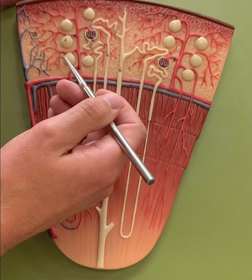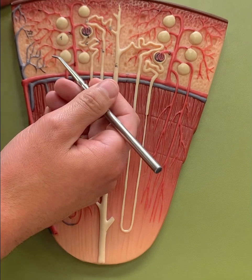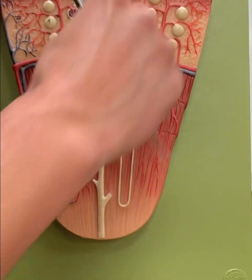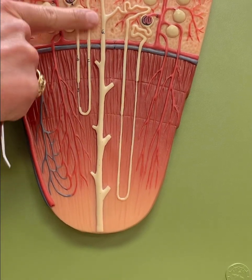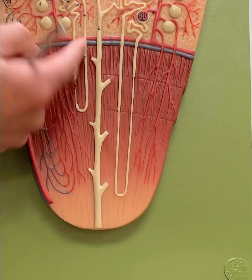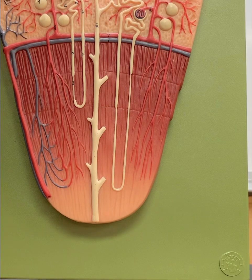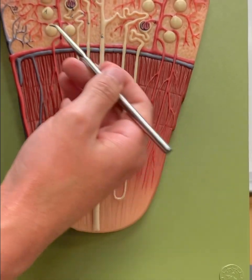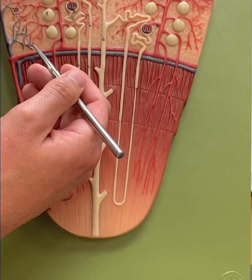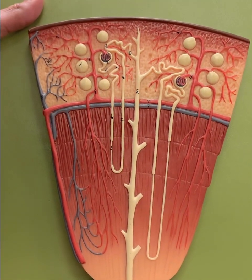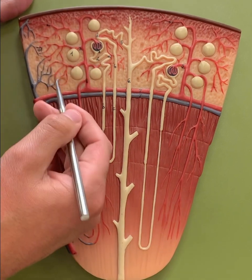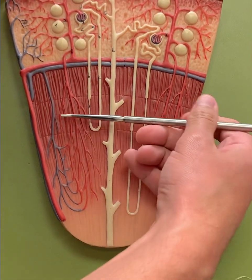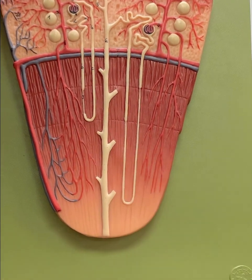Now let's go over the two main types of nephrons: cortical nephrons and juxtamedullary nephrons. Cortical nephrons are found primarily within the cortex, and their loop of Henle doesn't extend deep into the medulla. For juxtamedullary nephrons, you can see how it extends deep. The naming of the capillaries differs — the capillary network surrounding the tubules for cortical nephrons is known as the peritubular capillaries. For the juxtamedullary nephron, this capillary network is known as the vasa recta.